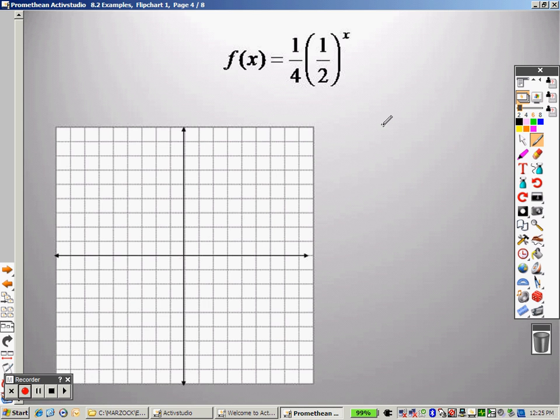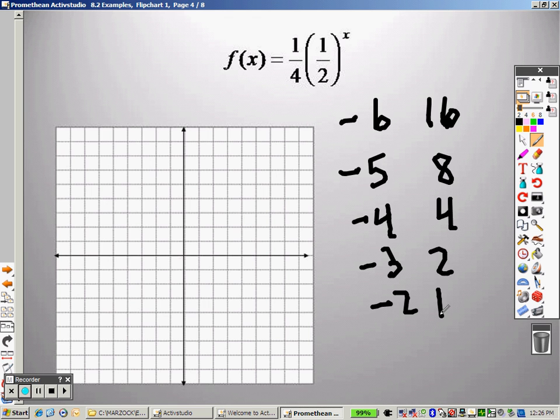Second graph and take a look at your points. We have negative 6, 16; negative 5, 8; negative 4, 4; negative 3, 2; negative 2, 1; negative 1, 0.5; and 0, 0.25. And you can see the trend here.